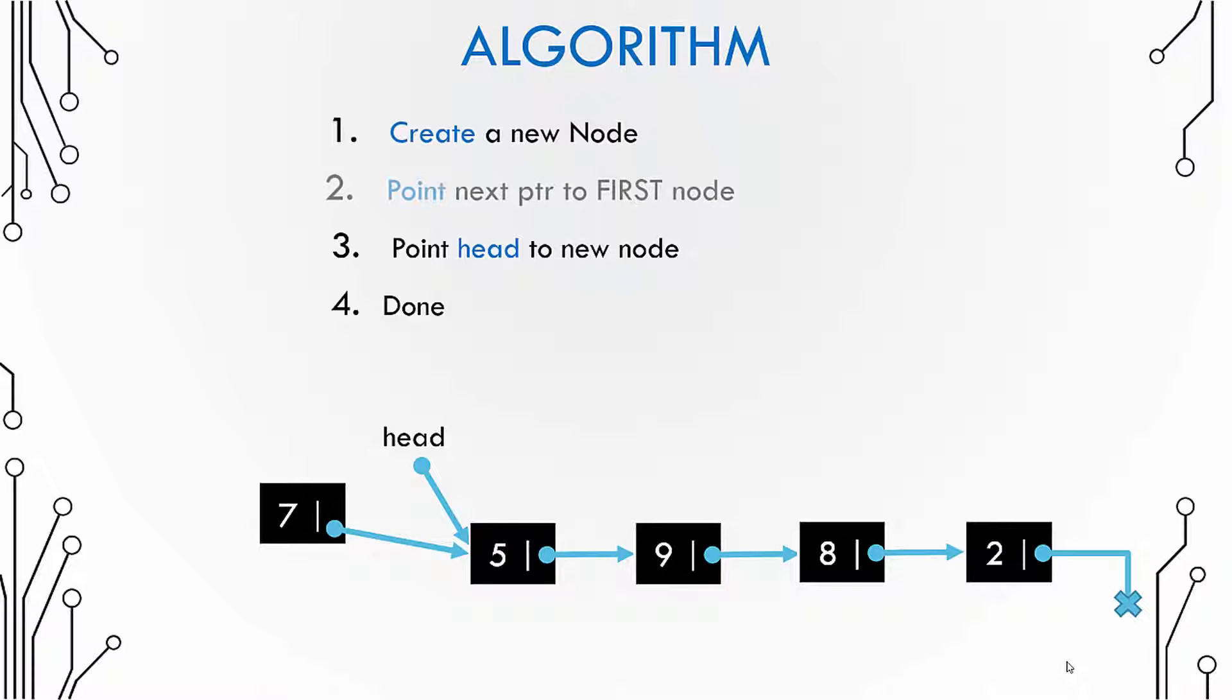Now, the next step is to move the head from pointing to the first node to the newly created node. Because head always points to the first node, right? That is the entry point of the linked list. You can only enter or you can only start traversing the linked list from the head node.